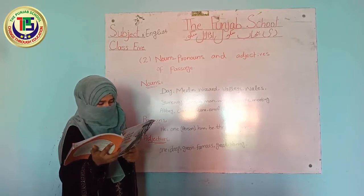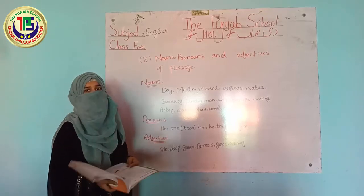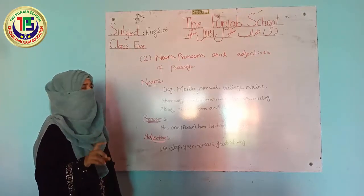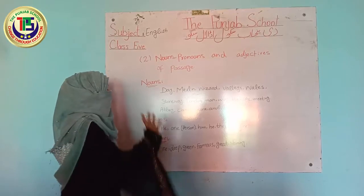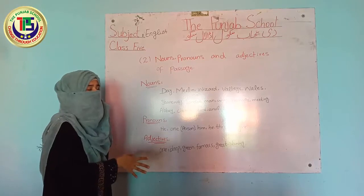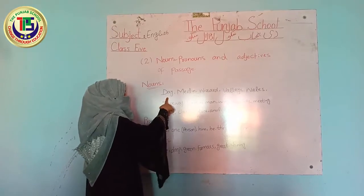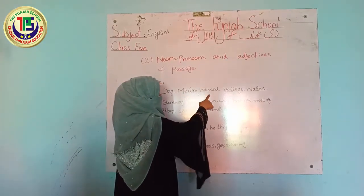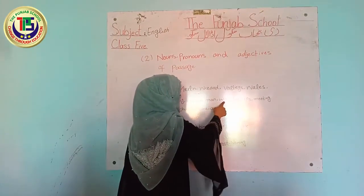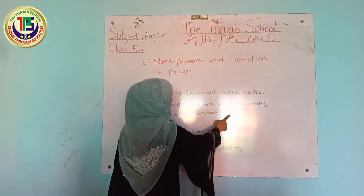There was a stone and in the stone was an anvil, and in the anvil was a shining sword. We have read the paragraph. Now we have to find the nouns used in this passage. The nouns are: Merlin, Wizard, Valley, Wales, Stoneway, London, Man, Way, Bishop's, Meeting, Abbey, Church, Stone, Anvil, Sword.